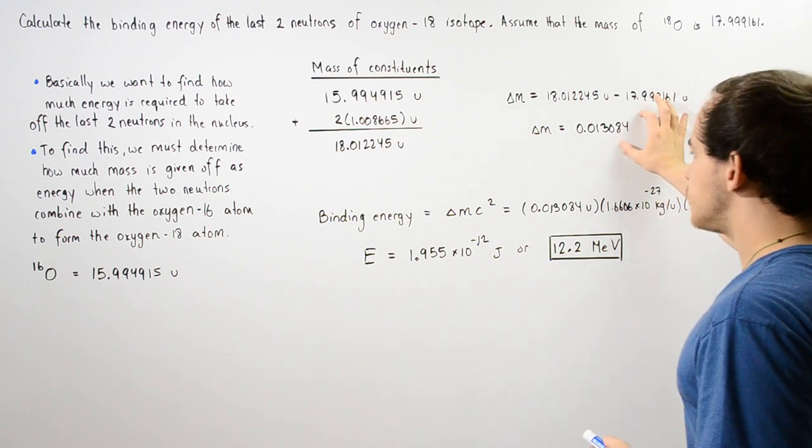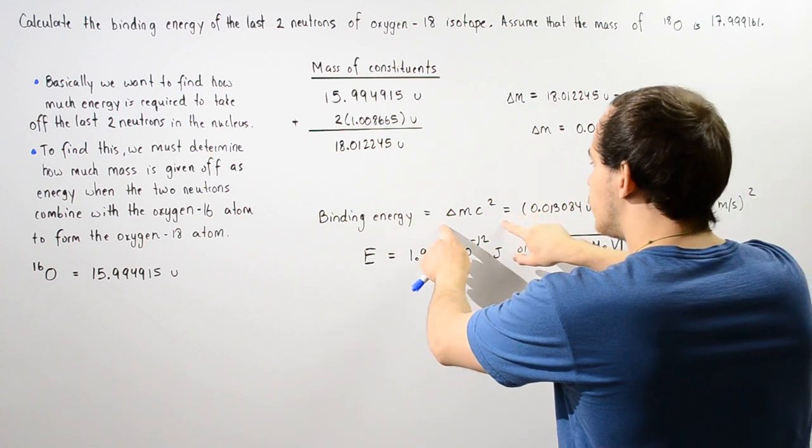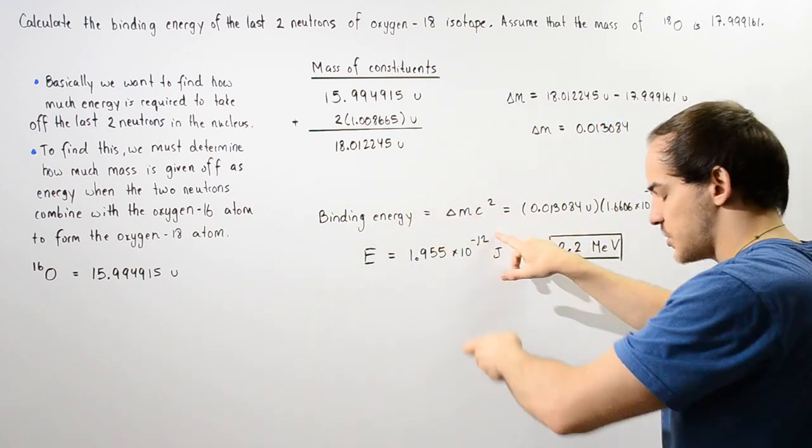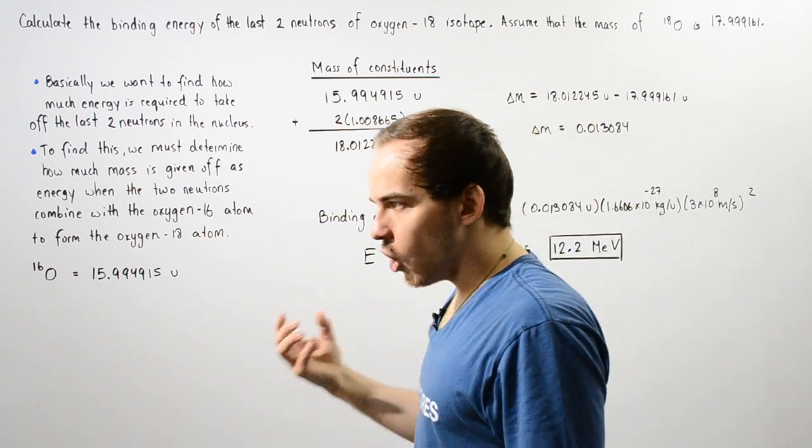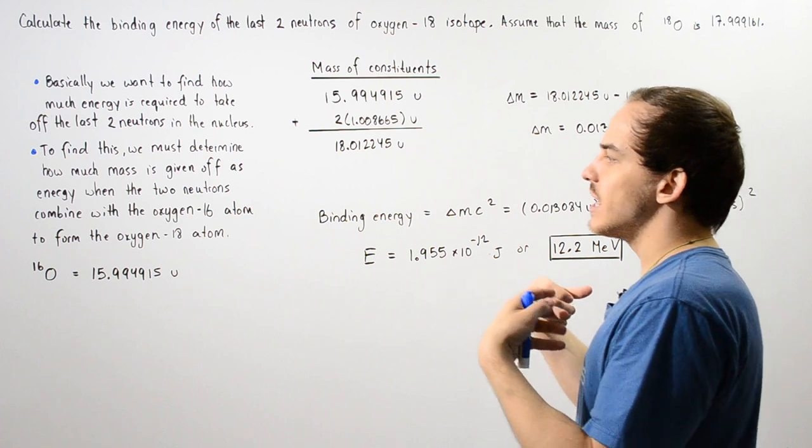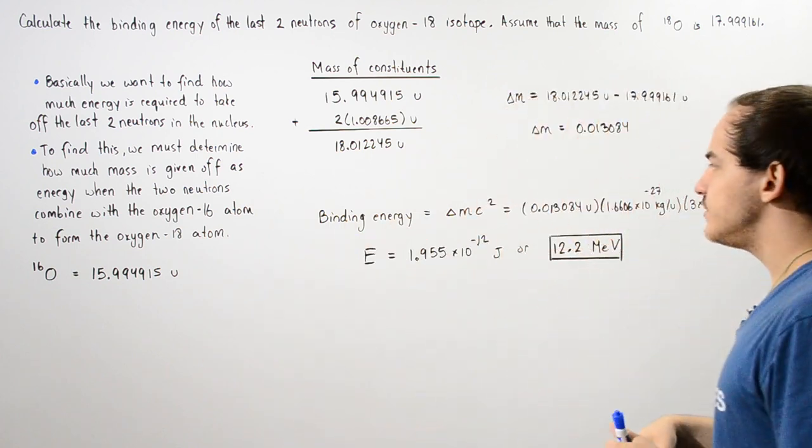Now we want to use this in the following equation, which is the rest mass energy equation. This gives us how much energy is given off when we have a certain amount of mass and that mass is converted entirely into energy.